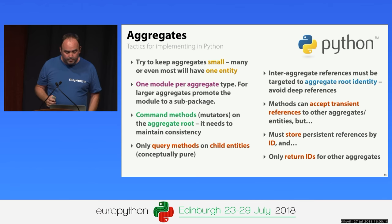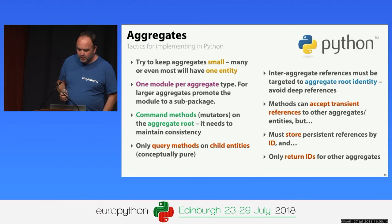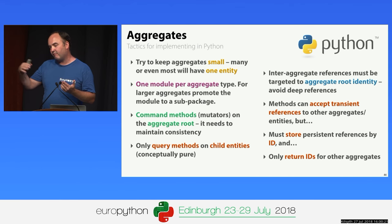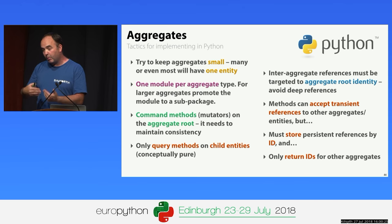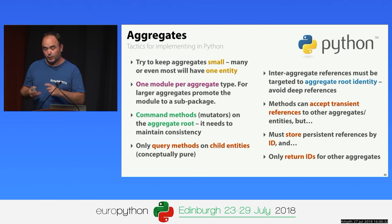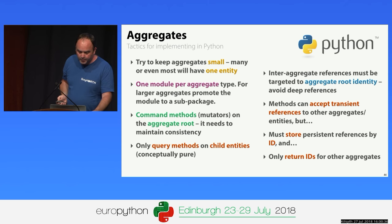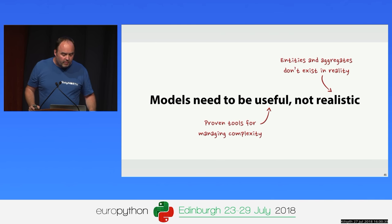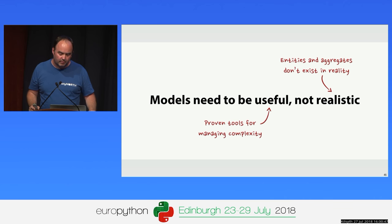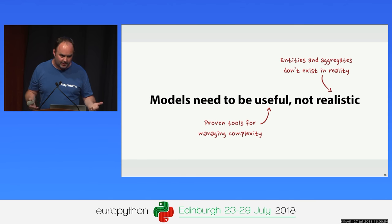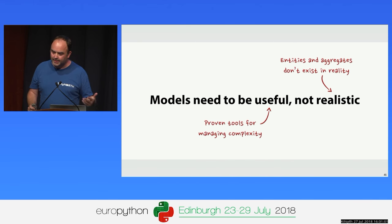Command methods should be on the aggregate root with only query methods on child entities. It's okay for methods to accept transient references to other aggregates as regular Python references, but you shouldn't keep hold of those. Above all, remember that your models need to be useful and not necessarily realistic. I've seen a lot of time wasted on producing incredible models of reality which turn out not to be very useful for the actual problem the system is solving. Try to keep things as simple, but as complex as they need to be to solve the problem.